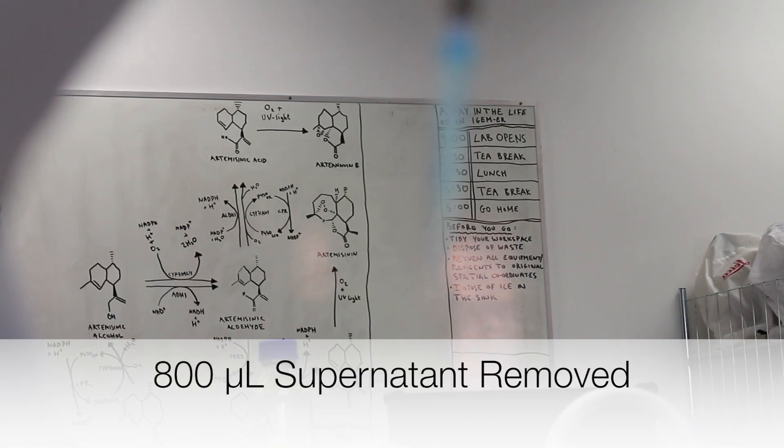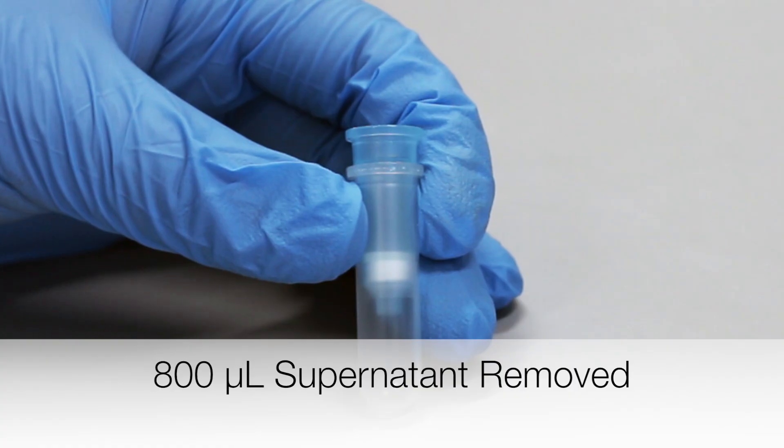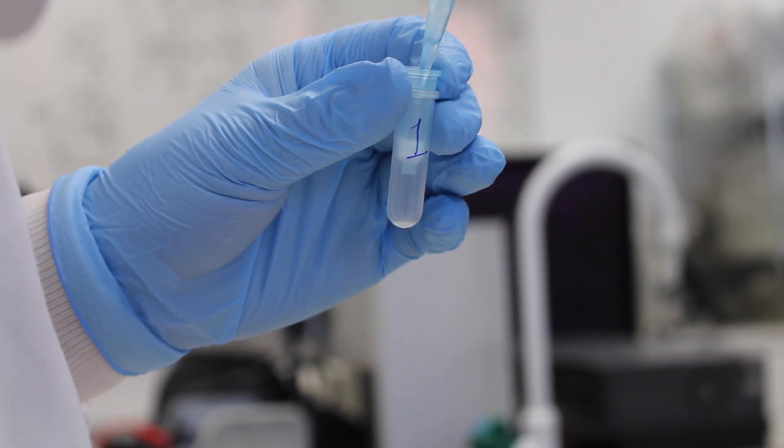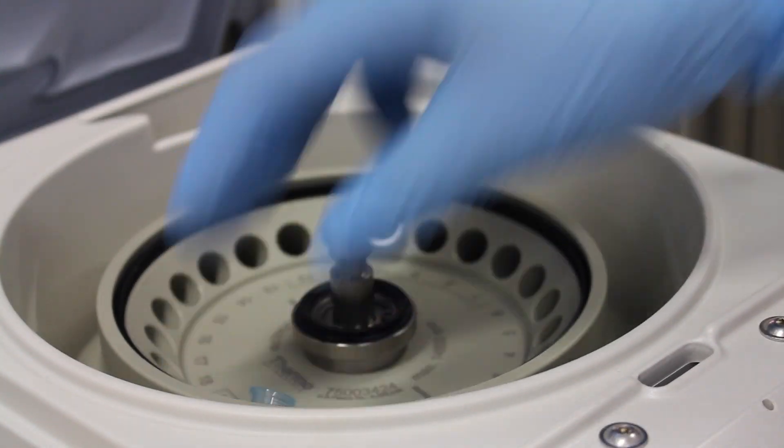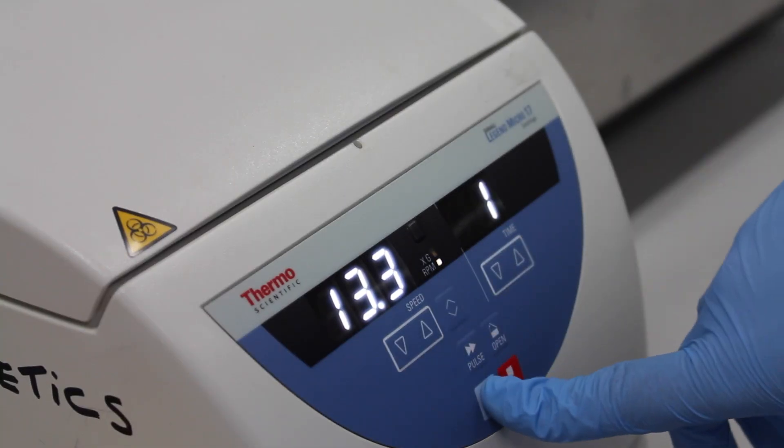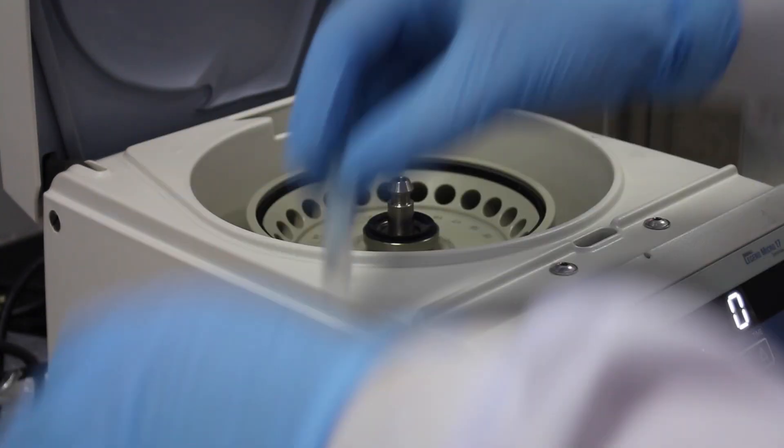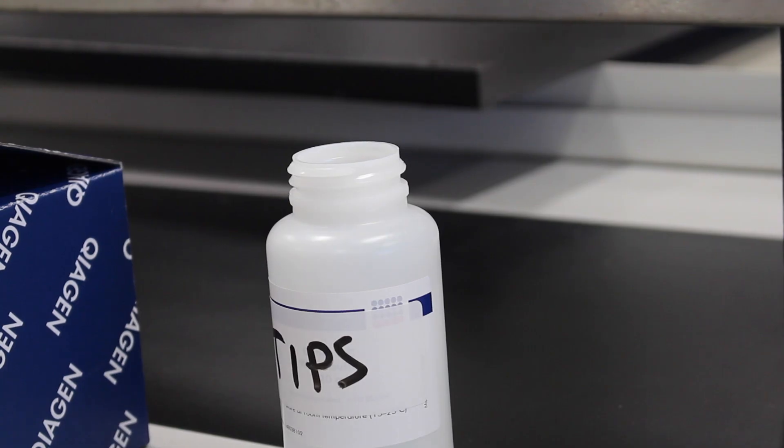800 microliters of the supernatant is then removed and transferred into a QIAprep 2.0 spin column. The samples are put into a centrifuge and centrifuged for 1 minute. The flow through is discarded.